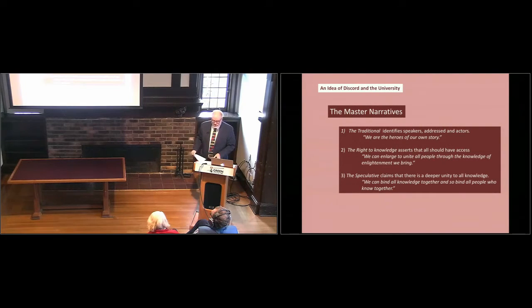He sketched three kinds of master narratives which, for the sake of unity, had placed knowledge in a coherent account of society. The first, a traditional narrative, identifies the current audience with the ones who are spoken about and also the ones who know and thus speak. We are the heroes of our own story. A narrative, second, of the right to knowledge, asserts that all the people should have access to knowledge. We can enlarge to unite all people through the knowledge of enlightenment we bring.